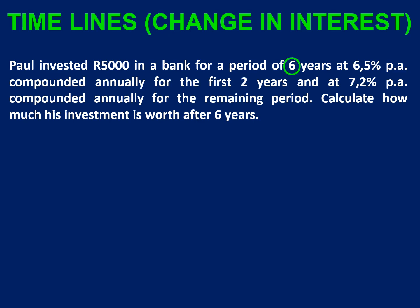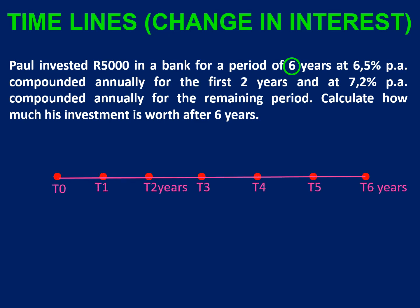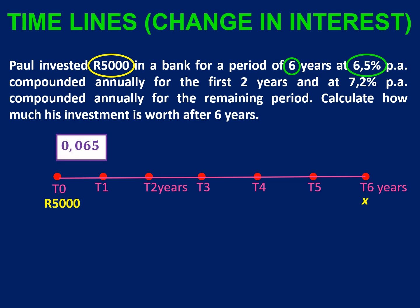The investment is for six years, so our timeline will run for six years. Five thousand Rand goes in right at the beginning, after no time has passed. The interest rate is 6.5% per annum compounded annually for the first two years. Remember, when we substitute that into our formula we divide by 100, so it's 0.065, and it's like that for the first two years.